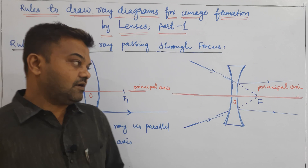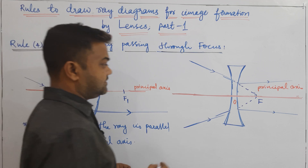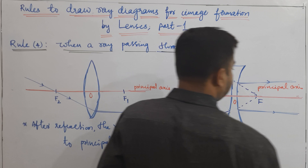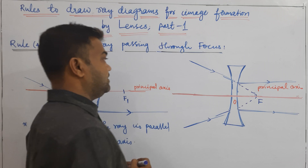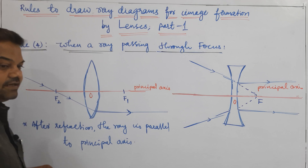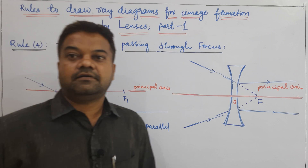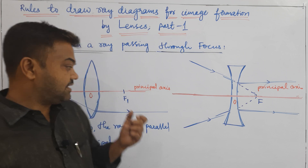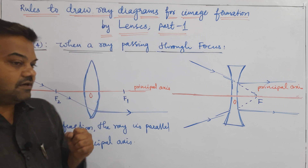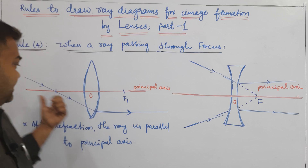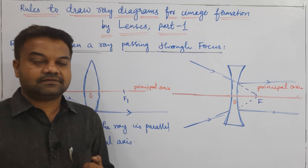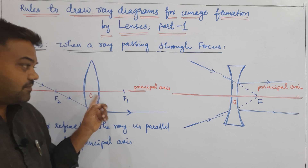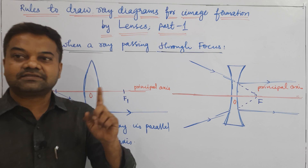Like this we have almost four cases. Four rules we can explain: one is when a ray parallel to principal axis, when a ray passing through focus, when a ray passing through optic center, and when a ray passing through principal axis.